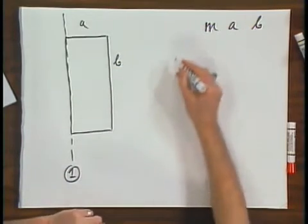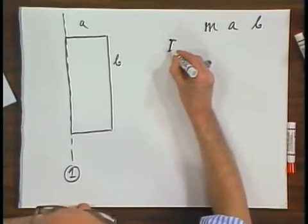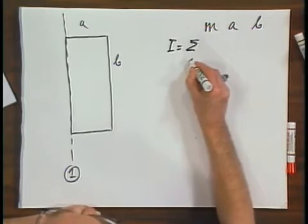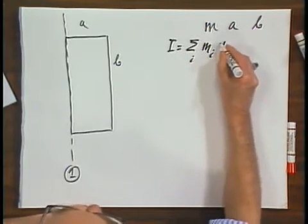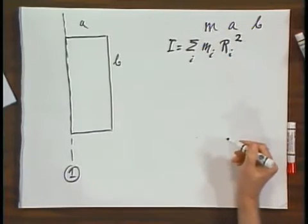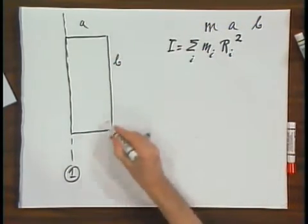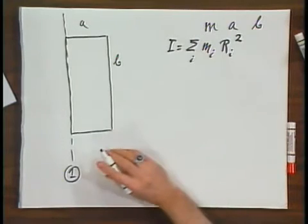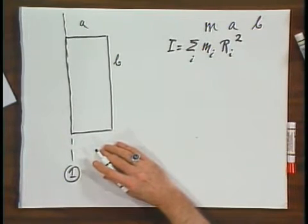Well, I now have to add up all these mass elements, M of I, multiply them by their distances to the axis of rotation. And since this is a continuous mass distribution, I have to use an integral.